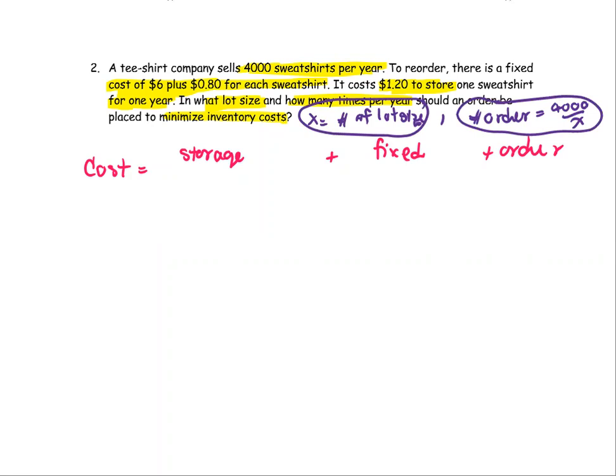For the first part, to reorder there is a fixed cost of $6 plus $0.80 for each sweatshirt. So the fixed one is $6 and $0.80 for each one of them. I will explain why I multiply by X over 2.